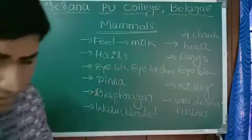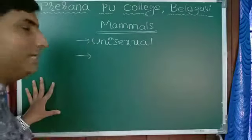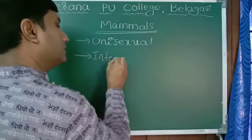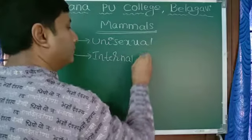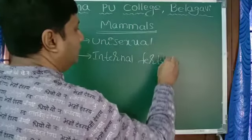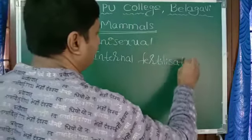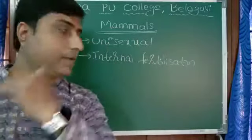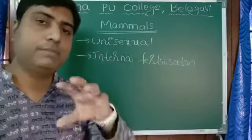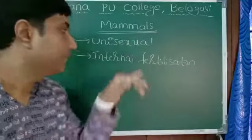All mammals reproduce sexually; they are unisexual — male and female are different. Fertilization is internal. External fertilization is found only in two groups: fishes and amphibians. From reptiles onwards — reptiles, birds, and mammals — all have internal fertilization.